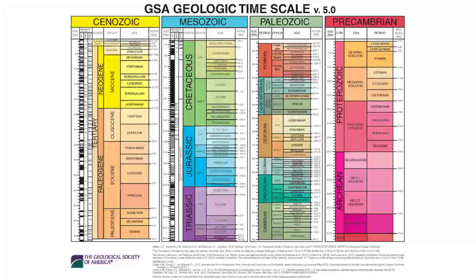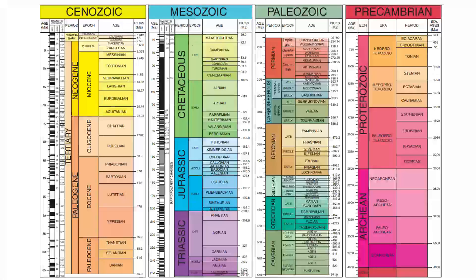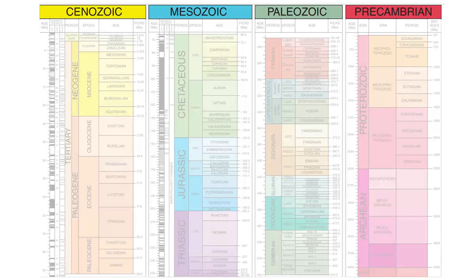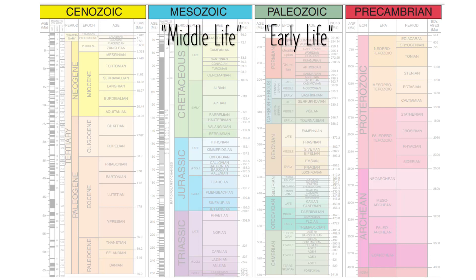Here's a close-up of that same time scale. Let's look at those headers — we've got four of them and we call them eons. Living things and life are pretty important to us, so that's how we've divided things up. The green, blue, and yellow ones are the time that we've had large fossils in the rock record, and we call those the time of life, or the 'zoics.' There's the Paleozoic, which is the old or early life; the Mesozoic, the middle life; and the Cenozoic, the recent life.